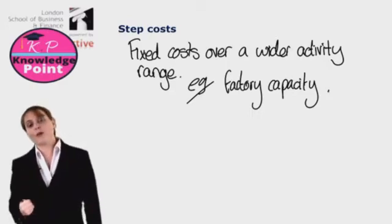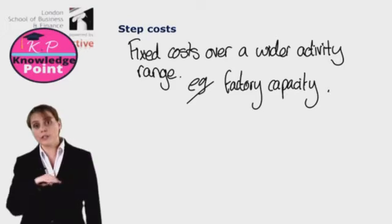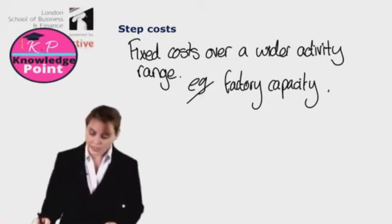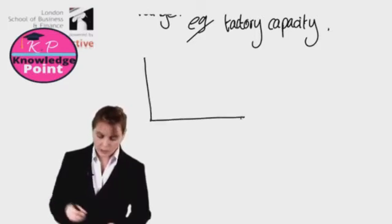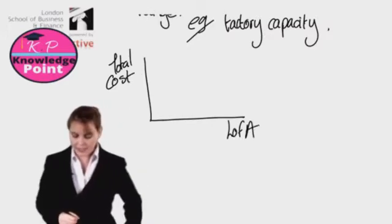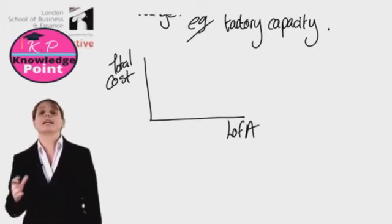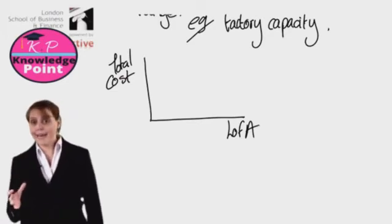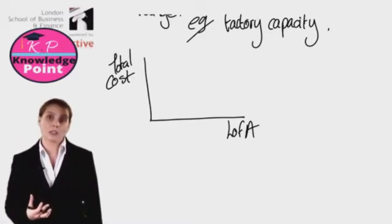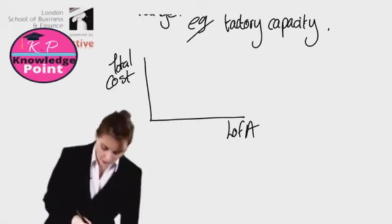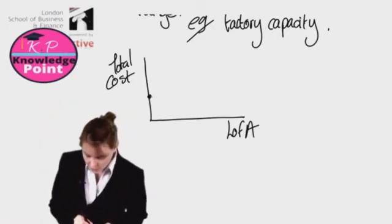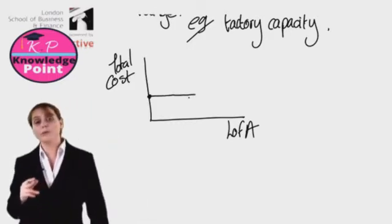Even though we expect rent to be a fixed cost — a fixed cost over a certain activity range — eventually that cost will increase. If we look at this on a graph, with total cost on the y-axis and level of activity on the x-axis: in relation to step costs, to begin with it behaves like a fixed cost. When our level of activity is zero, we still incur that cost. As our level of activity goes up initially, our total cost will remain the same.